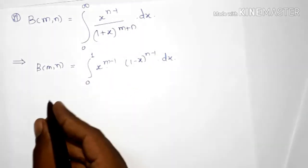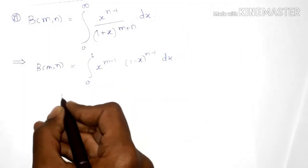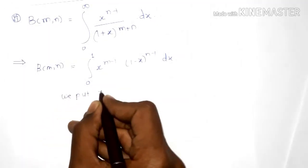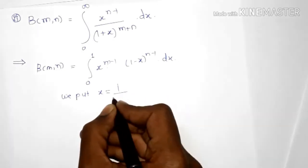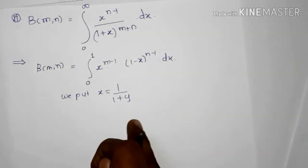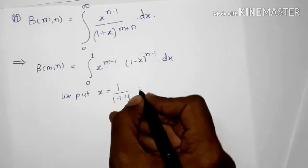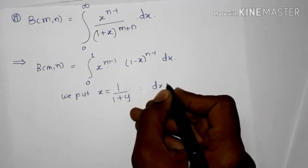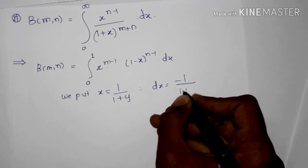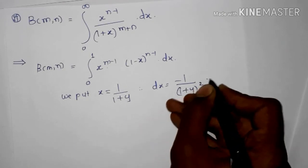Next we put x equal to 1 divided by 1 plus y. On differentiating we get dx equal to minus 1 divided by 1 plus y squared, into dy.